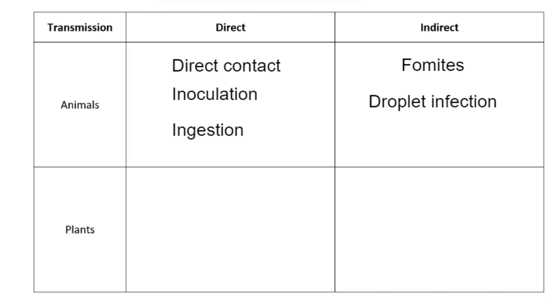The second method is droplet infection — a very common way pathogens can be transmitted. When someone coughs, sneezes, or talks very loudly, it releases droplets into the air that contain large numbers of pathogens. If someone inhales those droplets, that results in infection. Many diseases can be transmitted by droplet infection, such as the common cold, flu, or COVID.